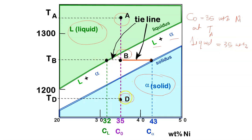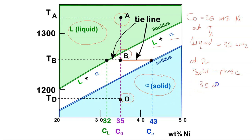At point D, we have the same original composition of 35 weight percent nickel but at a lower temperature T_D. At this temperature and composition, point D is located only in the alpha (solid) region. So the phase present is only solid, and the composition is 35 weight percent nickel, since it is the only composition present. At point B, however, we cannot simply take 35 weight percent nickel, because we are not sure whether that applies to the liquid or the solid — so that approach is wrong.